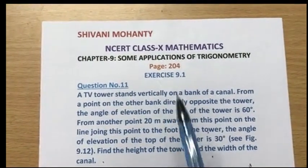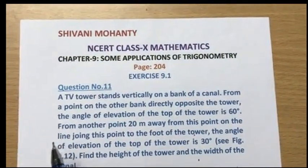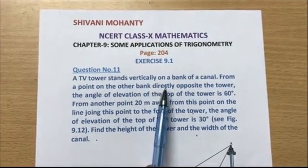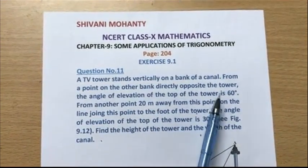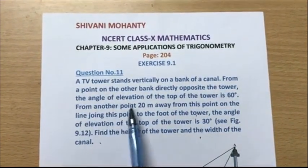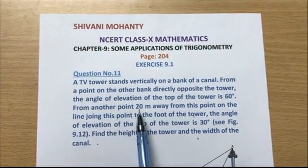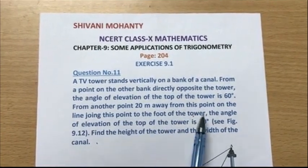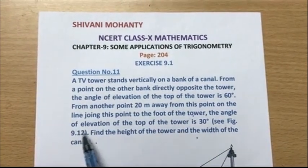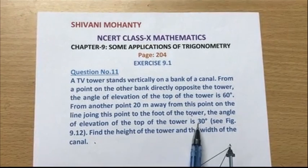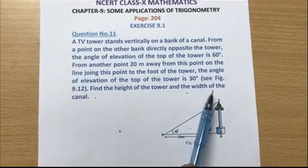Class 10 mathematics book. Let me read the question first. A TV tower stands vertically on a bank of a canal. From a point on the other bank directly opposite the tower, the angle of elevation of the top of the tower is 60 degrees. From another point 20 meters away from this point on the line joining this point to the foot of the tower, the angle of elevation of the top of the tower is 30 degrees. The figure is given in the book. Find the height of the tower and the width of the canal.